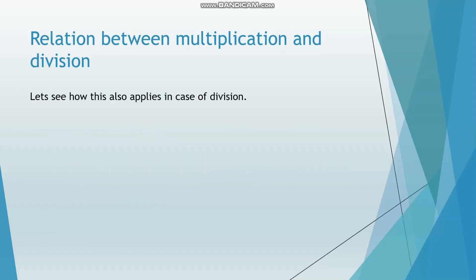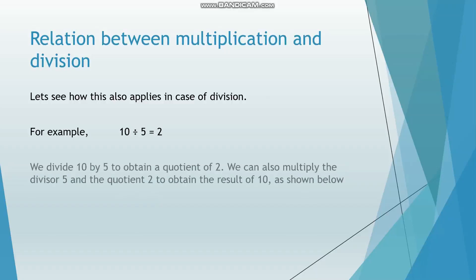Let's see how this also applies in case of division. For example, 10 divided by 5 is equal to 2. We divide 10 by 5 to obtain a quotient of 2. We can also multiply the divisor 5 and the quotient 2 to obtain the result of 10, as shown below: 2 multiplied by 5 is equal to 10.